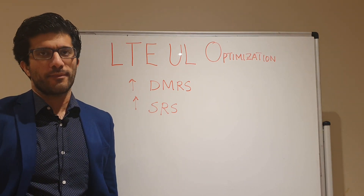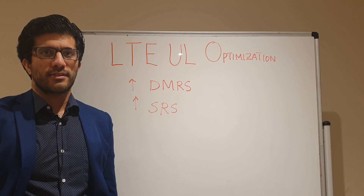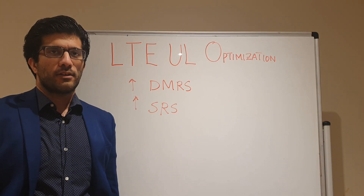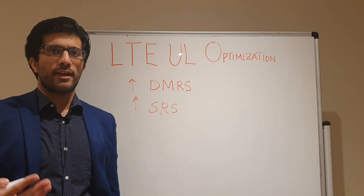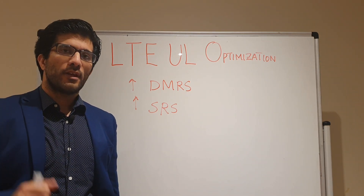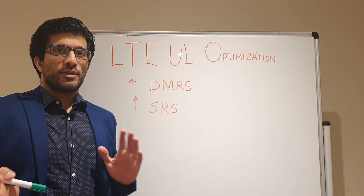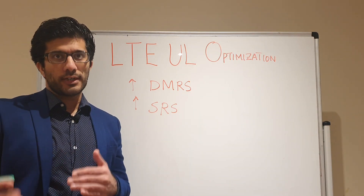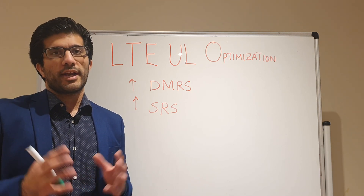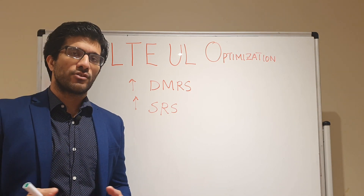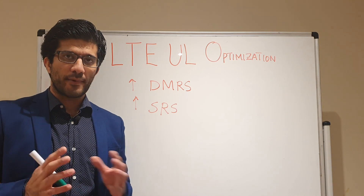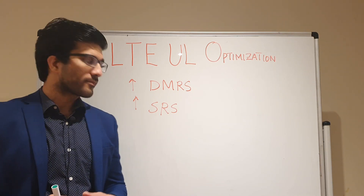What happens is that a known symbol is inserted into the DMRS, and your eNodeB basically tries to demodulate your data based on what kind of channel impact it sees on your DMRS. So this signal is primarily used for demodulation.